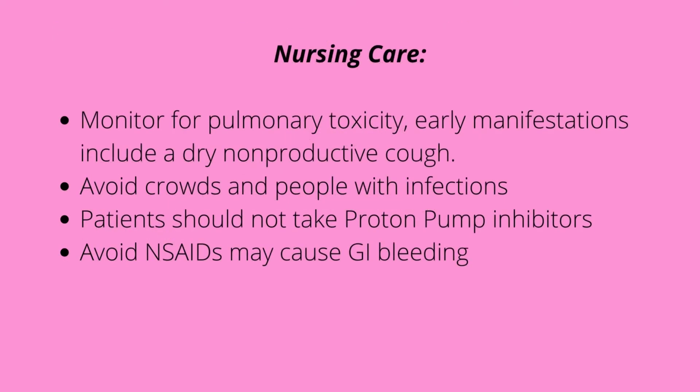For nursing care: since this patient is going through thrombocytopenia, we monitor for pulmonary toxicity, which is an early manifestation. Early signs include a dry non-productive cough. We avoid crowds and people with infections. These patients should not take any PPIs — proton pump inhibitors — and they should avoid NSAIDs as well, as these may cause GI upset.